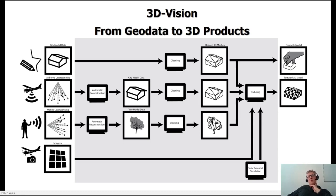We make automated reconstructions of city models and tree models, do some cleaning to get out 3D meshes of buildings and vegetation, and apply texturing with solar potential simulations. At the end we have printable models as well as textured 3D models.